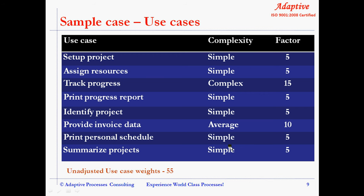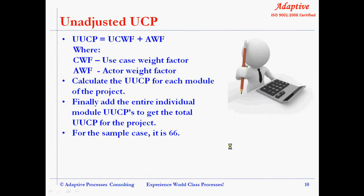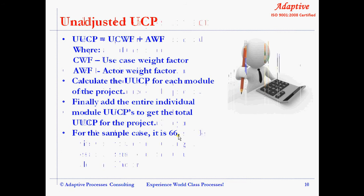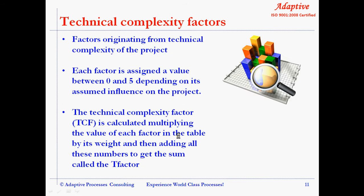The unadjusted use case points (UUCP) is calculated by summing the actor weight factor and the use case weight factor. For the sample case, it is 66. Calculate the UUCP for each module of the project, then add all individual module UUCPs to get the total UUCP for the project.